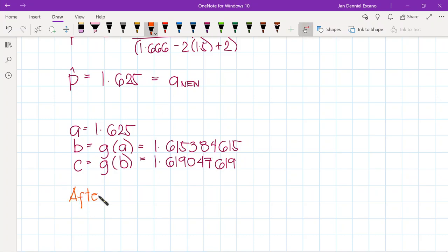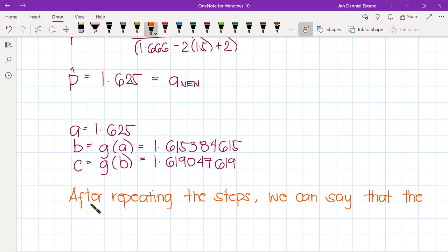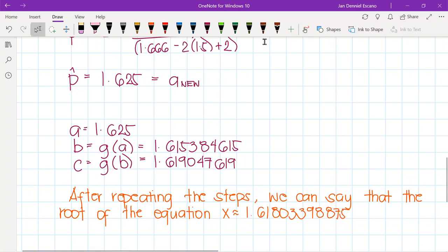After repeating the steps, we can say that the root of the equation is approximately, so we can say that x is approximately 1.6180339875.